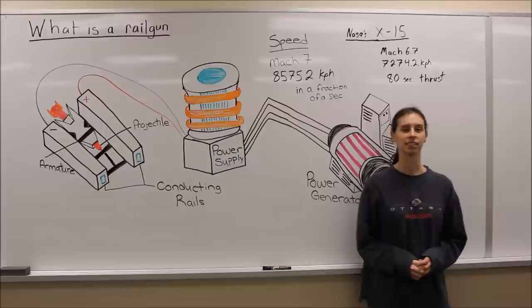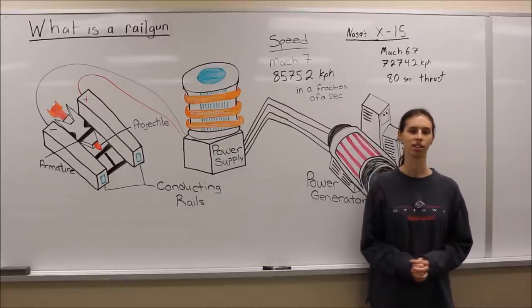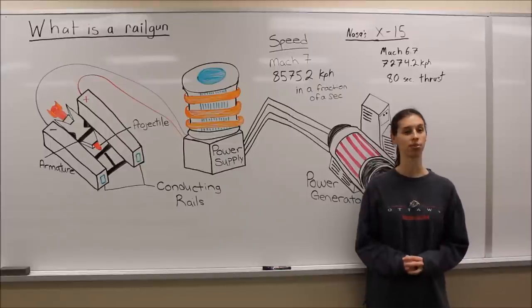However, the rail gun goes to a speed of Mach 7, which is 8,575.2 kilometers per hour. It can reach that speed within a fraction of a second.